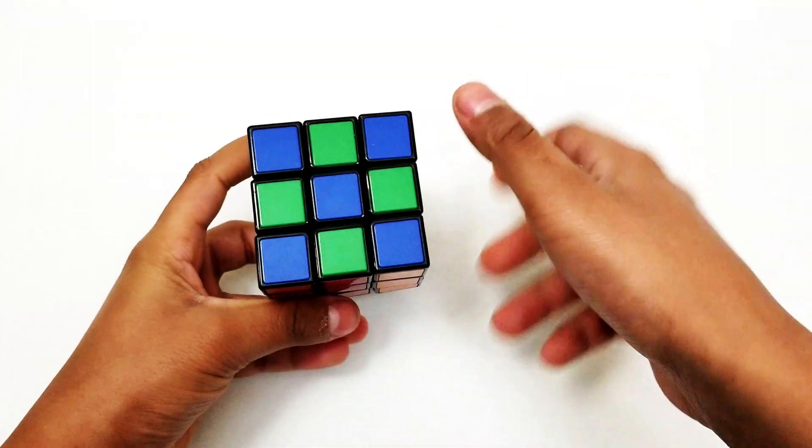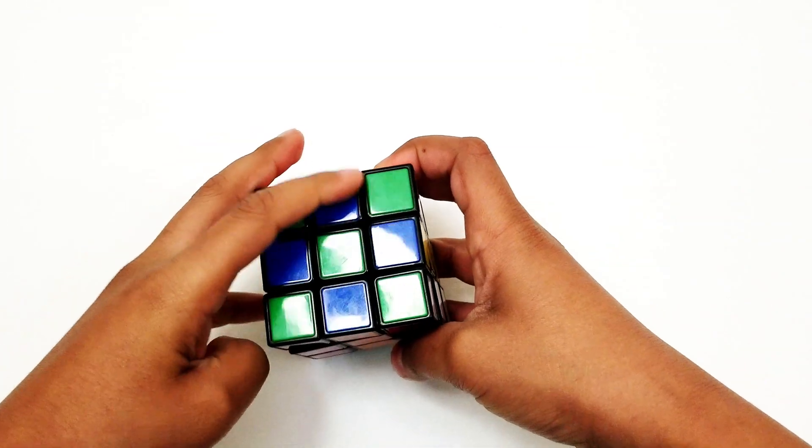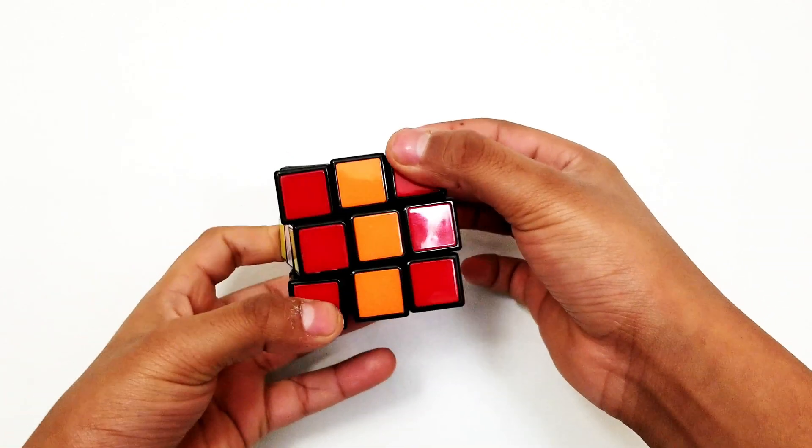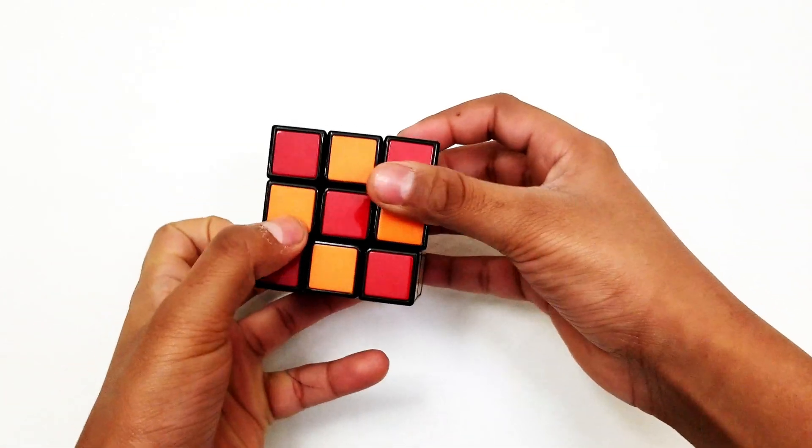Now you'll have two faces with checkerboards. Then take your cube up and spin the middle layer twice again.